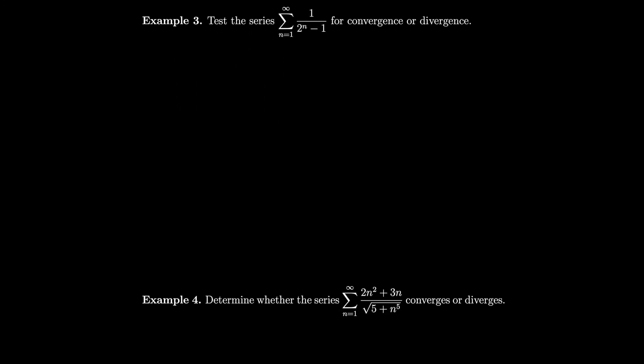Let's use that on the series 1/(2^n - 1). Notice that 1/(2^n - 1) is bigger than 1/2^n because subtracting 1 from the denominator makes a smaller denominator, which makes a bigger fraction. But 1/2^n is a convergent geometric series, so 1/(2^n - 1) is bigger than a convergent series — that tells us nothing by the comparison test. But if we set a_n = 1/(2^n - 1) and b_n = 1/2^n, then we can do the limit comparison test.